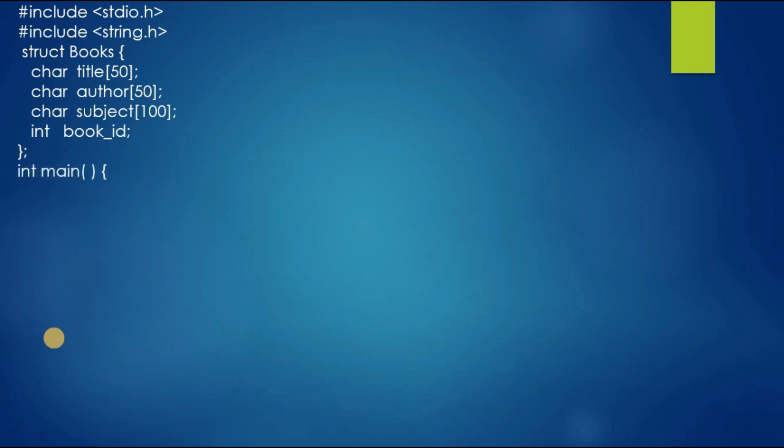Then we declared the main function. Inside the main function we declared book1 of type Book, for struct books. We declared the book1. Then now we will give a specification for book1.